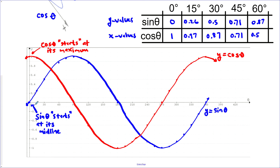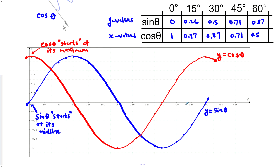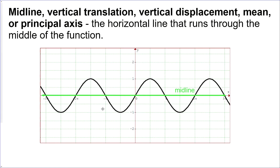I've plotted sine θ in blue and cosine θ in red. Two important things: cosine's y-intercept is at a maximum naturally before transformations, and sine naturally starts at its midline before transformations. There are several terms we need to know. The horizontal line through the middle of the function is called the midline, also called the vertical translation or vertical displacement, and also called the mean, average, or principal axis.